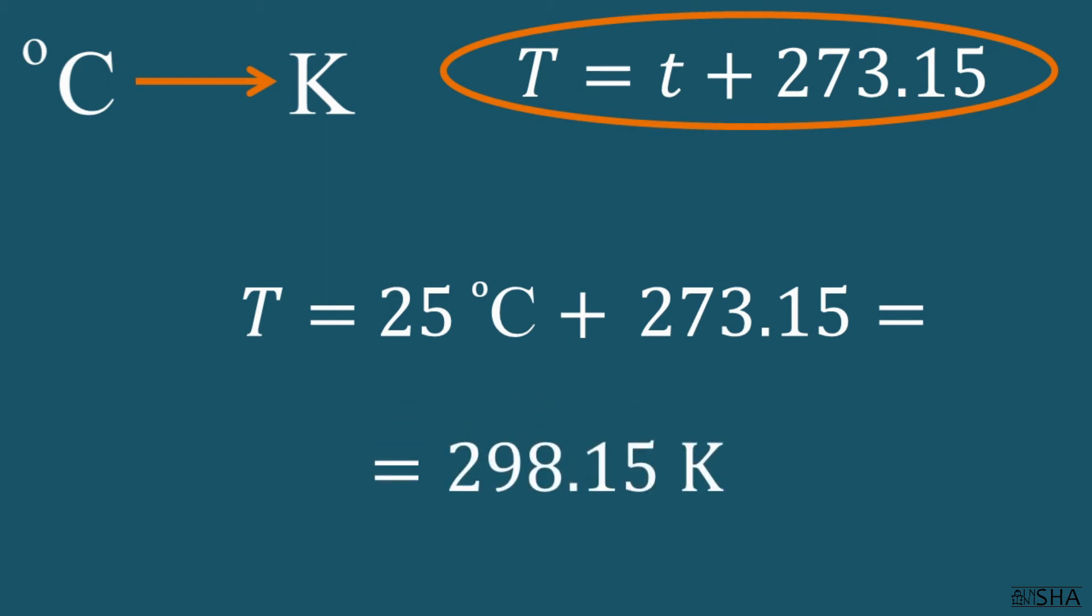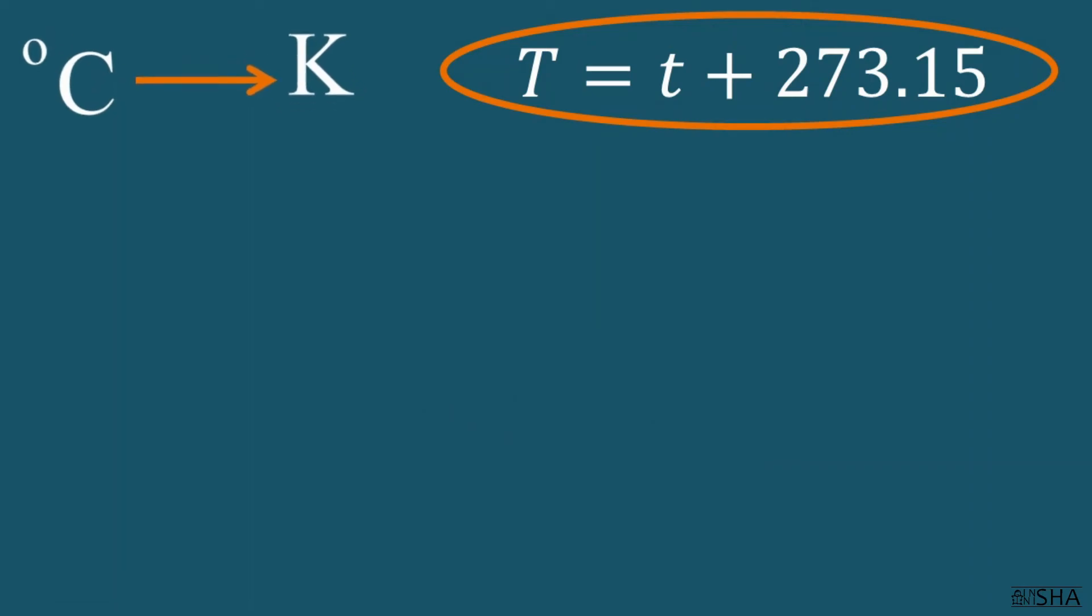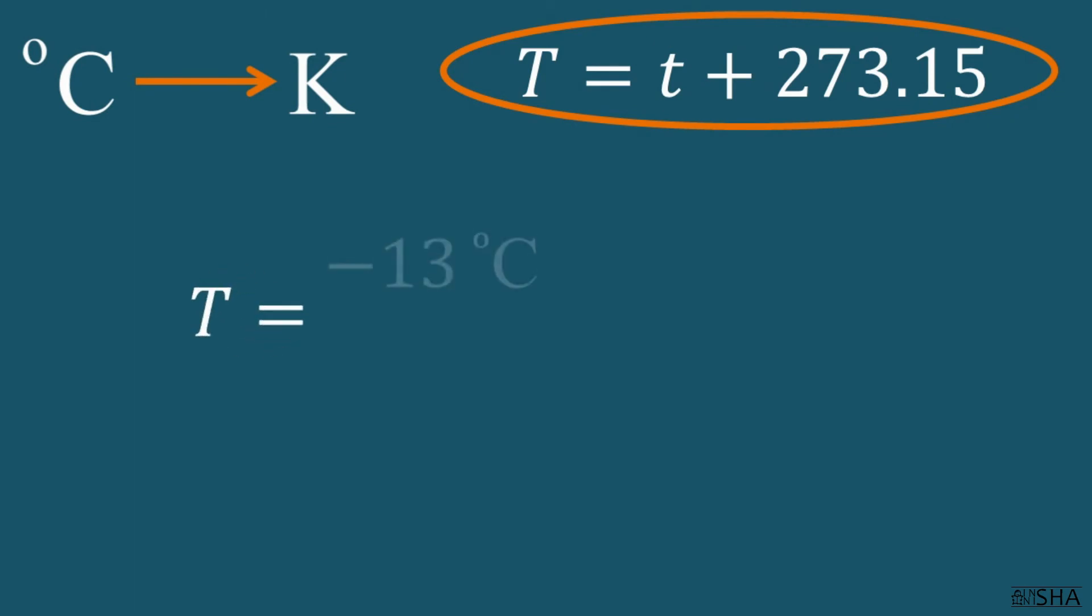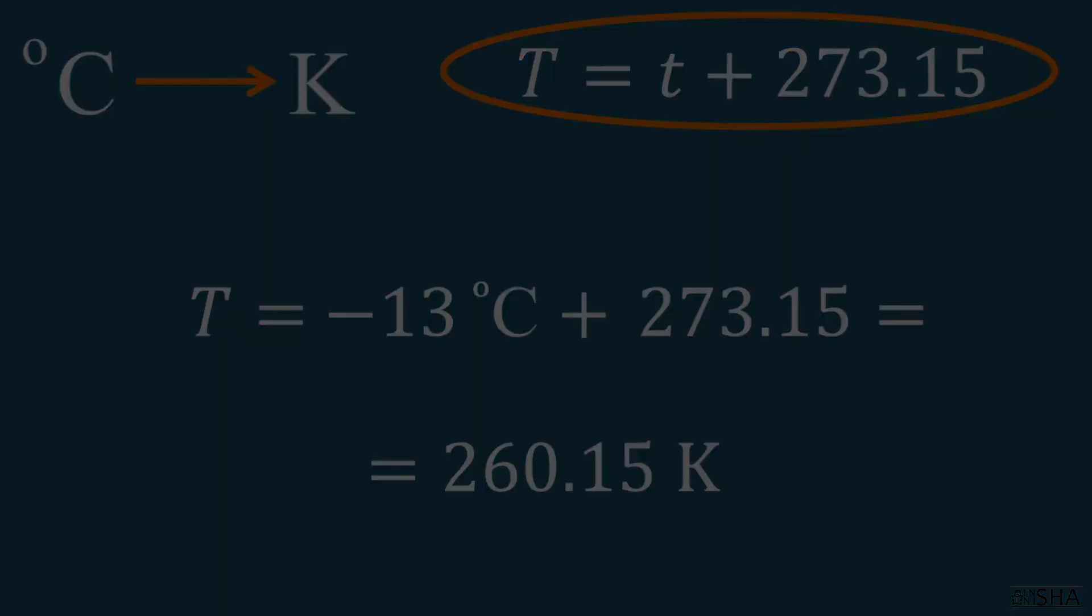Negative 13 degrees Celsius, convert to Kelvin. Big T equals negative 13 plus 273.15. We calculate, not forgetting that 13 is negative, and we get 260.15 Kelvin.